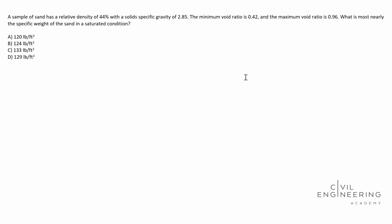So the trick to this question is to remember what we're looking for. We need to solve for the specific weight of the sand in the saturated condition. So that means we need to solve for gamma saturated. To find this formula, we'd go ahead and write it out here. We have our specific gravity plus our void ratio times gamma of water, specific weight of water, over 1 plus our void ratio.